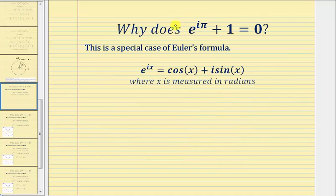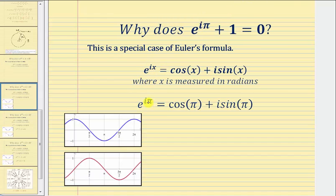So going back to our original question of why e raised to the power of i pi plus one equals zero, we can now show why this equals zero using Euler's formula when x is equal to pi. So if we substitute pi for x, we would have e raised to the power of i pi equals cosine pi plus i times sine pi.